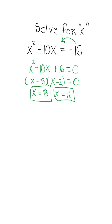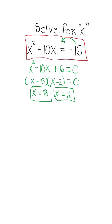However, 9 times out of 10 it's not going to work like this. What they want you to do is to complete the square. So if we start it over, we'll take half of the B term, which is 10, and then square it to create our perfect square trinomial.